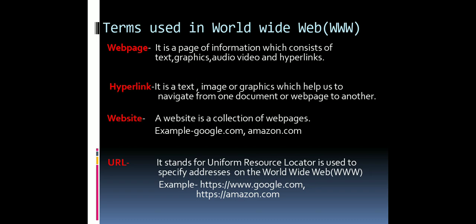A website is a collection of web pages. You know about Google and Amazon — these are all websites. In websites like Amazon and Flipkart, when you click, there are many web pages. You can go from one web page to another with the help of hyperlinks. All those pages together are collectively known as one website.